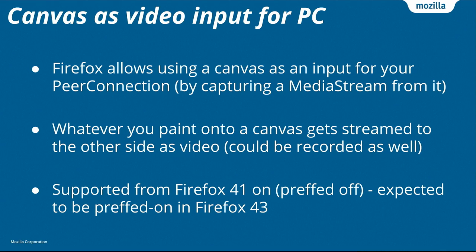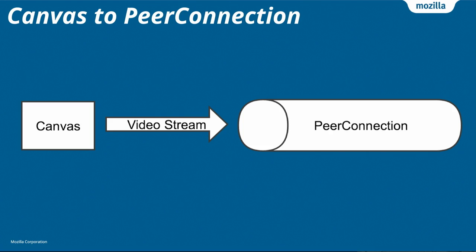If you want to try it out right now, it's what we call pref off, so you need to go into about:config and switch a user preference to turn it on. But we're expecting it to be live in Firefox 43, which is, I believe, hitting the market in November. Just to go back to the previous slide — basically in the picture, we just replaced the camera with a canvas as the video input.